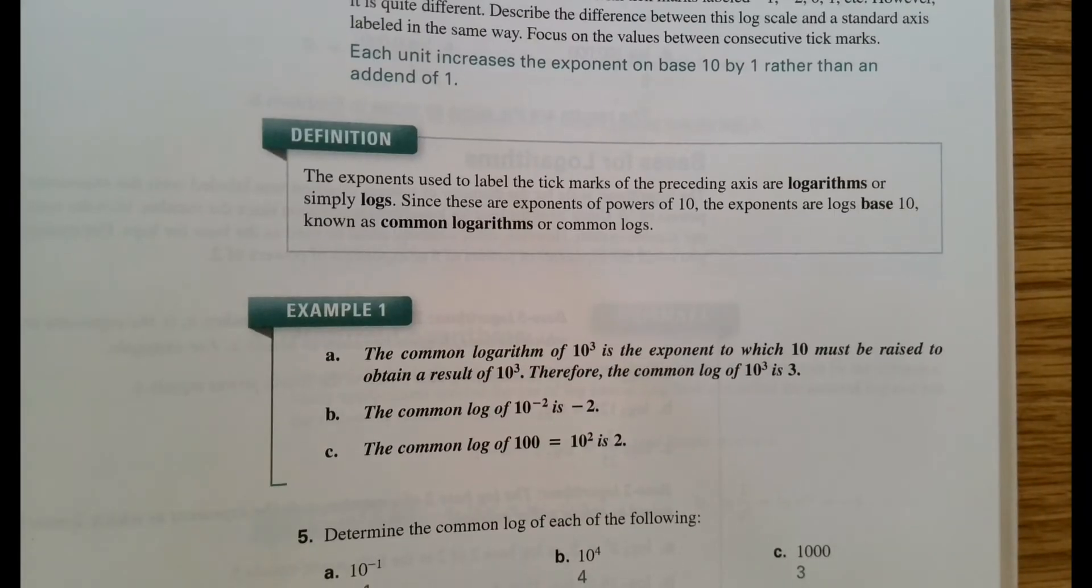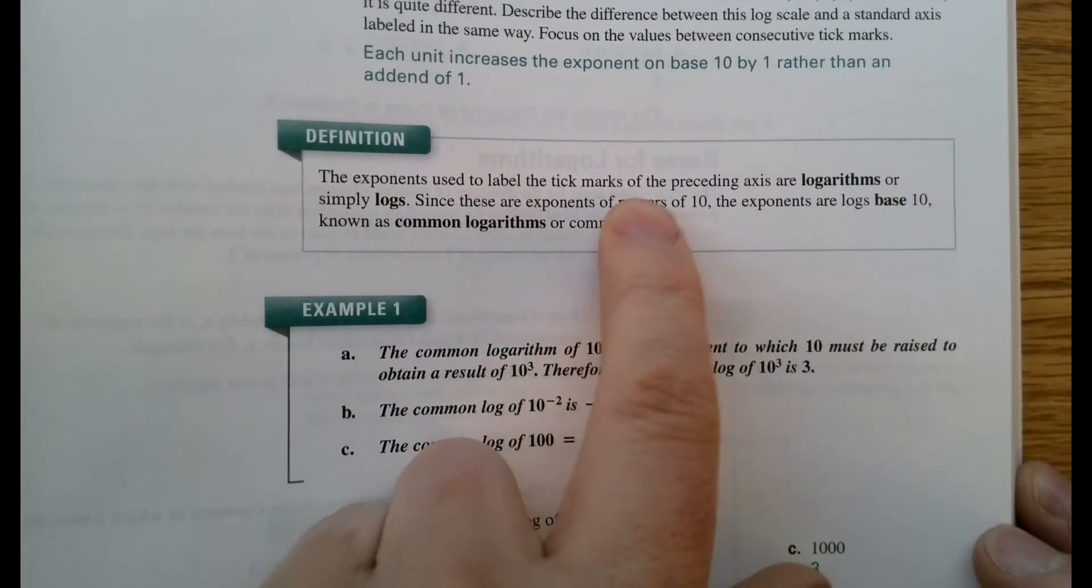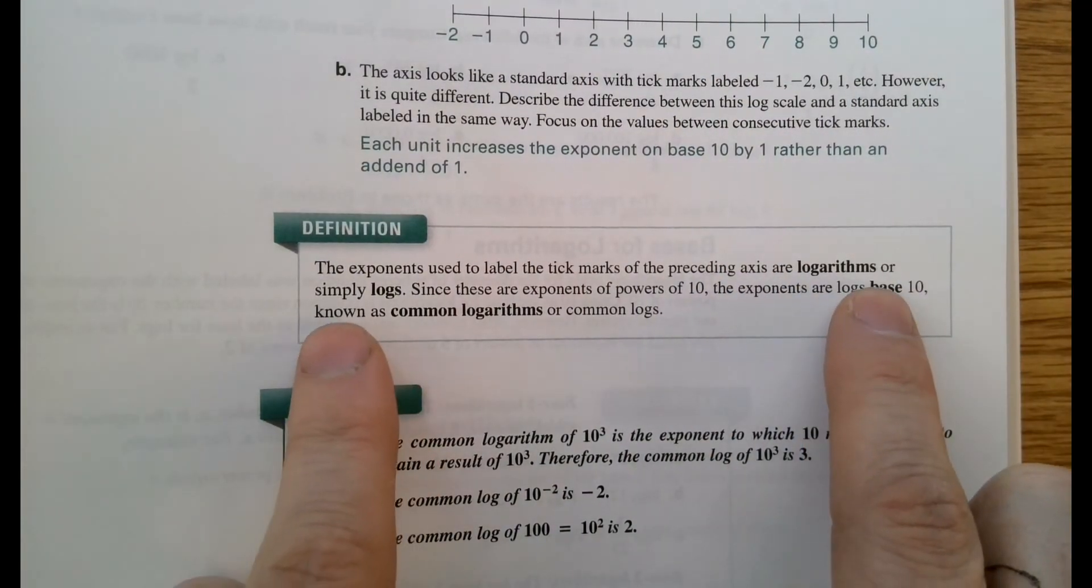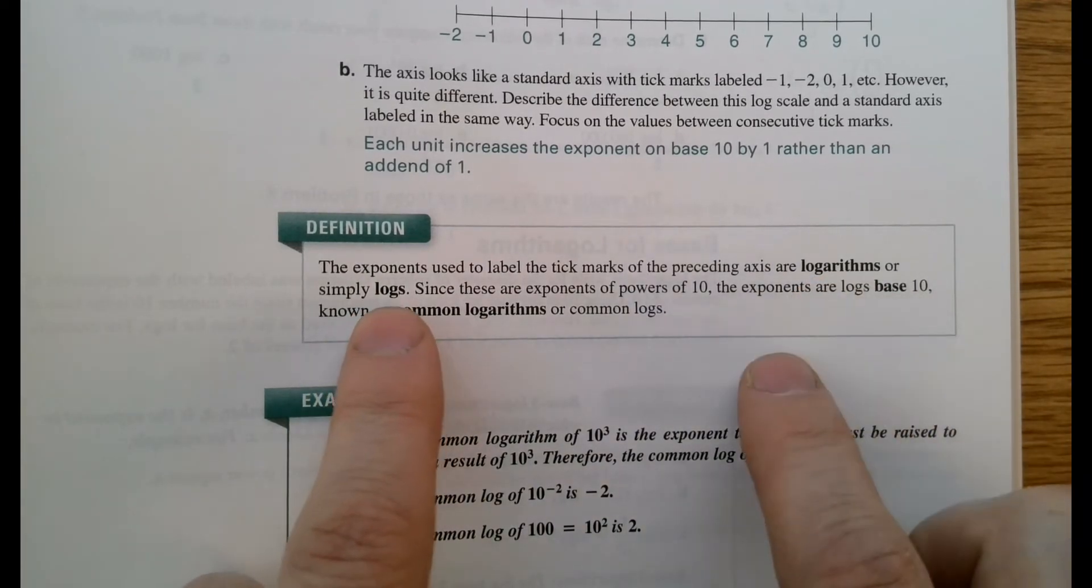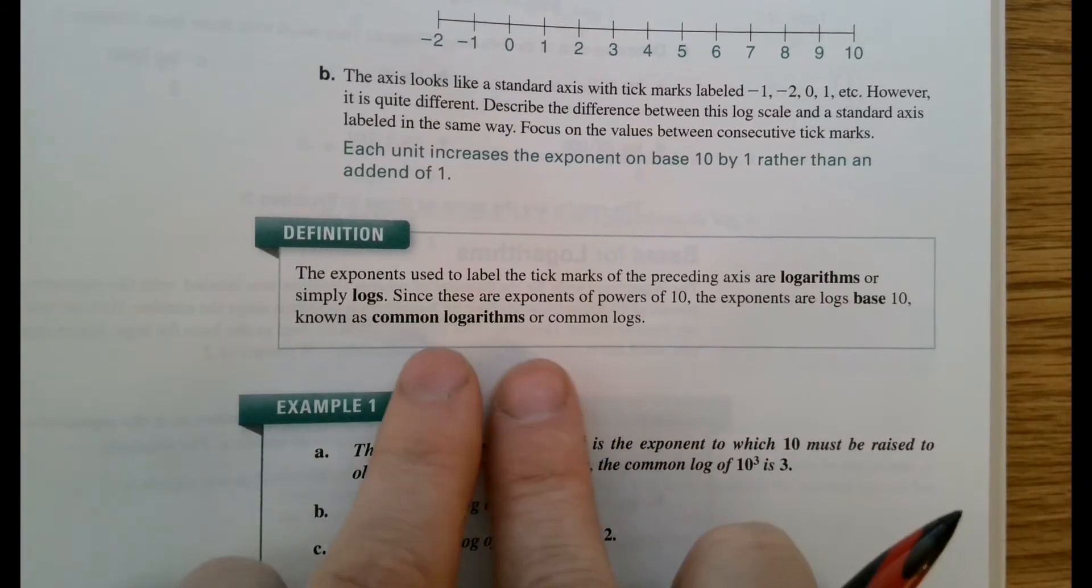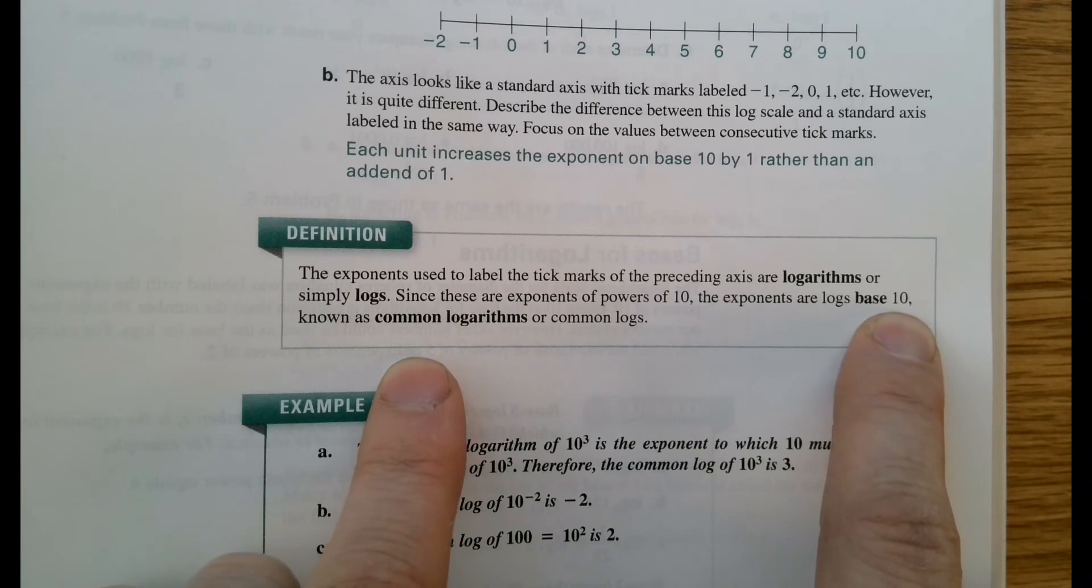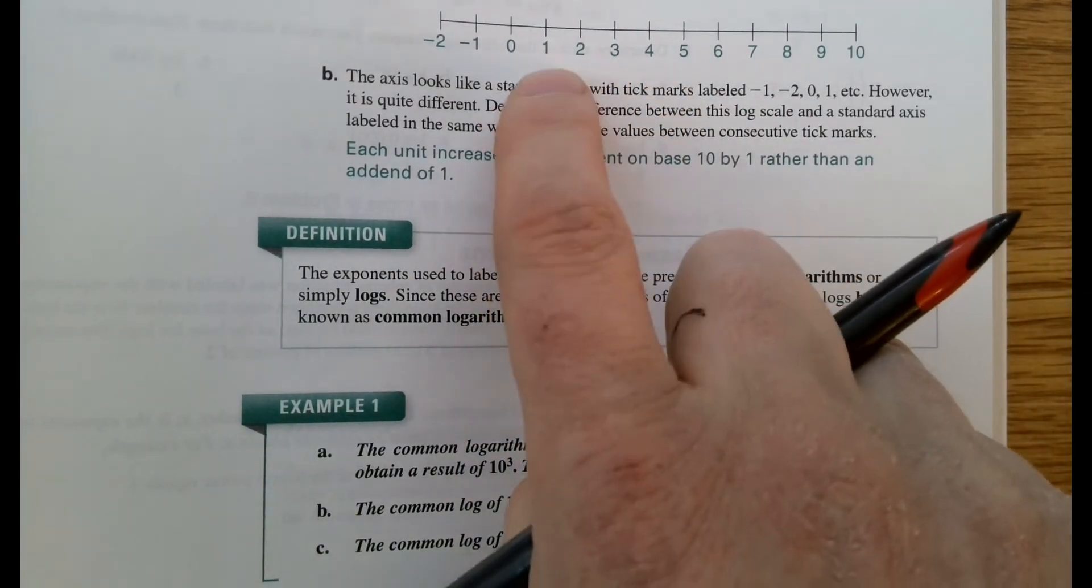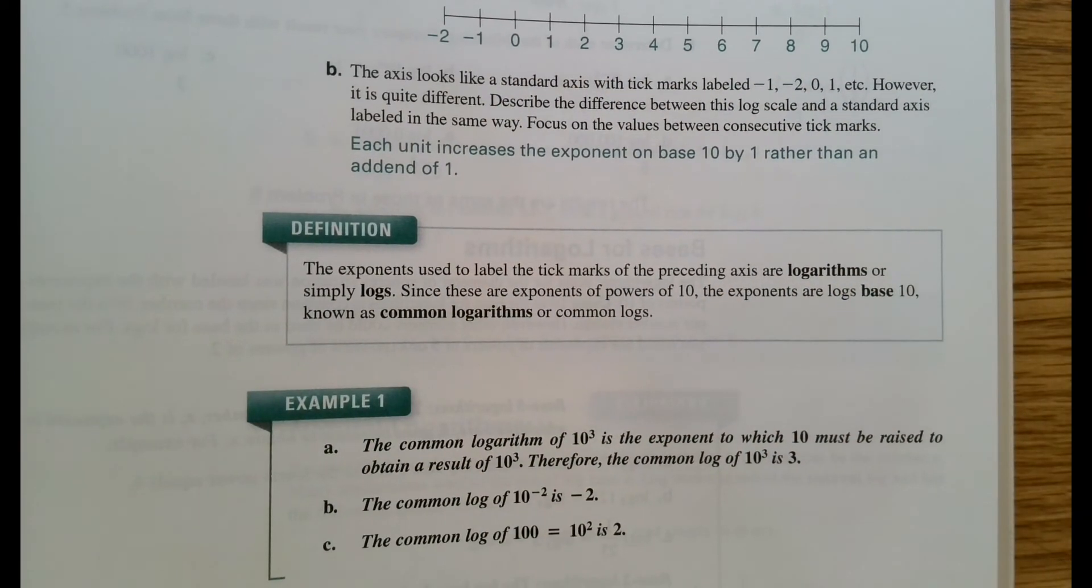So we can actually write an exponential function to model that if we wanted to. So let's figure out what in the world is this logarithmic thing that we're talking about. The exponents here used to label the tick marks of the preceding axis are logarithms, or more simply, we just say logs. That's the abbreviation of a logarithm. Since these are exponents of powers of 10, the exponents are logs base 10, because each one came from the base of 10 raised to whatever that power is. We call those a common logarithm or common logs.